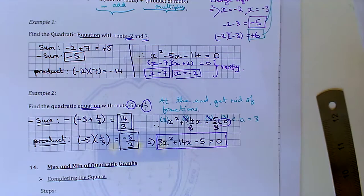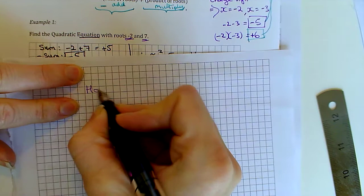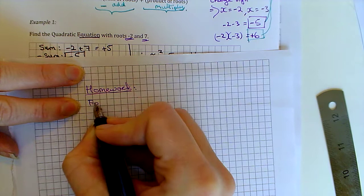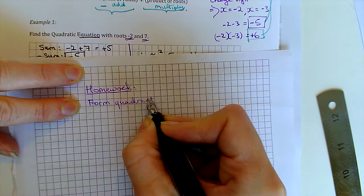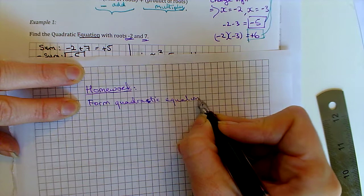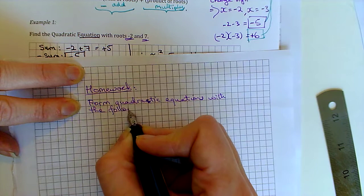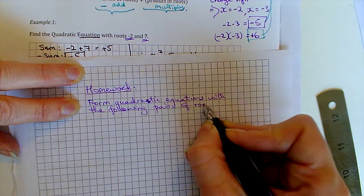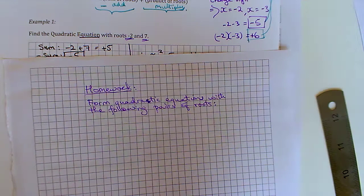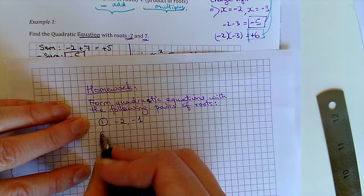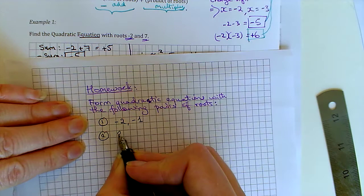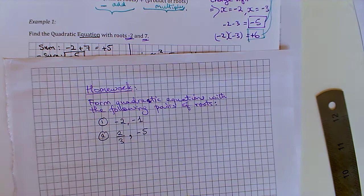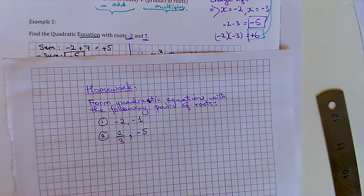So I am going to ask you to try some of these yourselves for homework. I'll put this up in Google Classroom as well. So for homework, I want you to form quadratic equations with the following pairs of roots. So for the first one, it's going to be -2 and -1. And for the second one, it's going to be 2/3 and -5. So it should be nearly identical to what we just did in those examples there. And I will see you guys tomorrow.